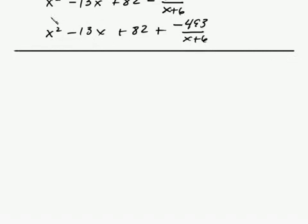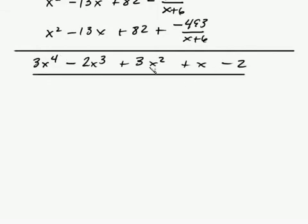And either one of these top answers, like I said, would be your final answer. So let's do this last problem here. Now this is a little bit difficult for you guys, so bear with me and just use your calculator if you need to. You have 3x to the 4th minus 2x cubed plus 3x squared plus x minus 2, and that is all being divided by x plus 5.